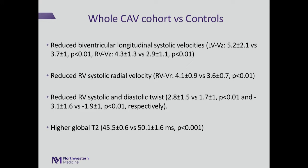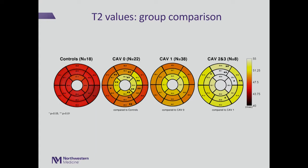Globally, CAV patients had higher T2 values. At the segmental level, CAV0 patients already showed significantly higher T2 in several segments of the left ventricle compared to controls — meaning differences are detectable even at this very early stage of coronary allograft vasculopathy. CAV2 and CAV3 groups also presented some segmental T2 differences compared to the CAV1 group.